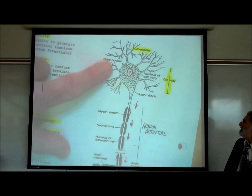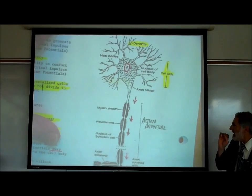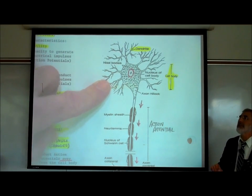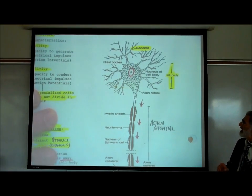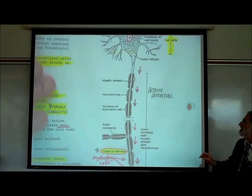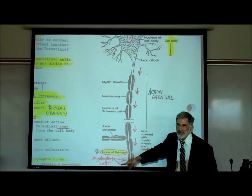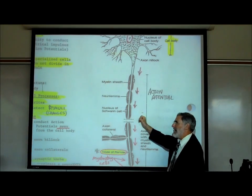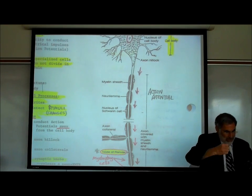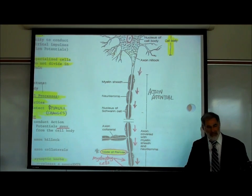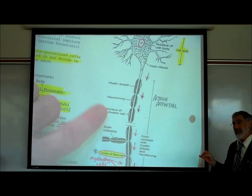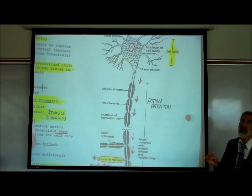I want to emphasize that whether something is an axon or a dendrite is not related to how long it is — there are dendrites as long or longer than axons. It also has nothing to do with whether myelinating cells are wrapped around them; there are dendrites that have myelinating cells. They are defined structurally by whether they have knobs at the end. If they don't, they are dendrites; if they do, they're axons. And by their function.